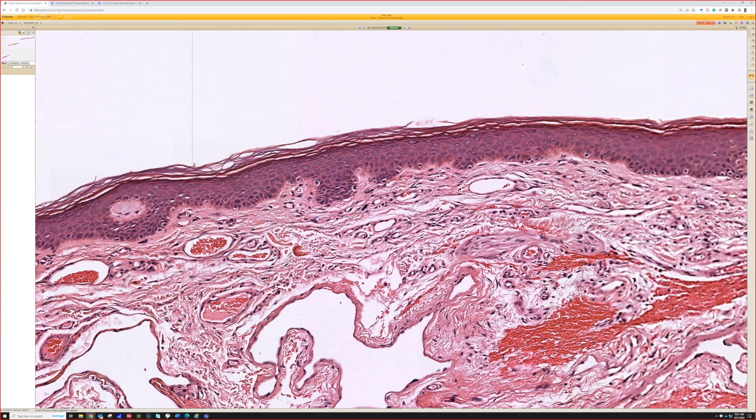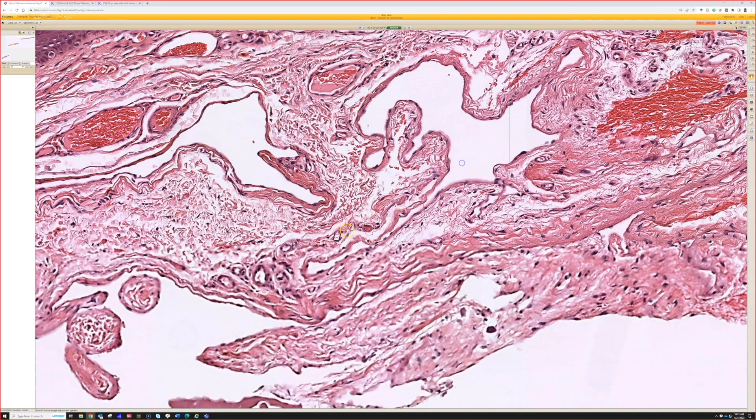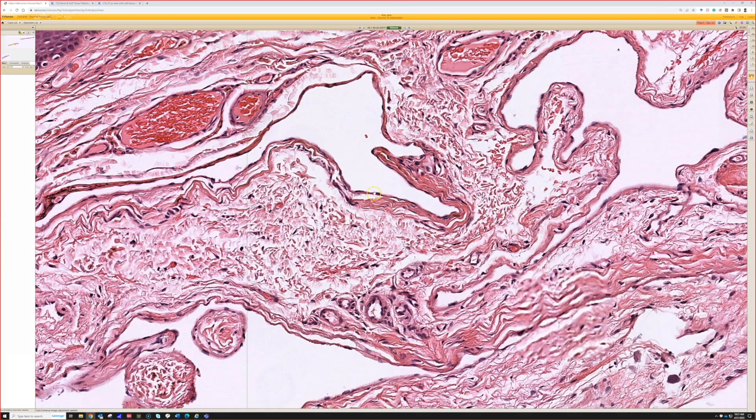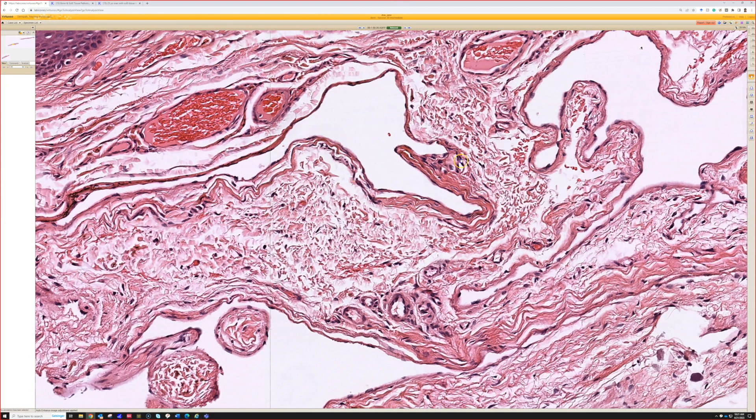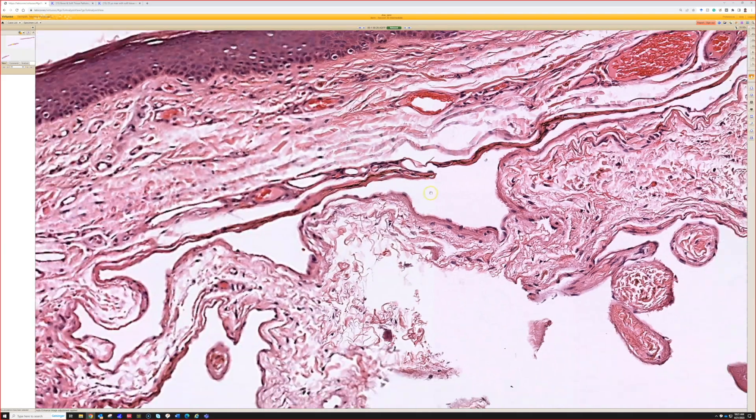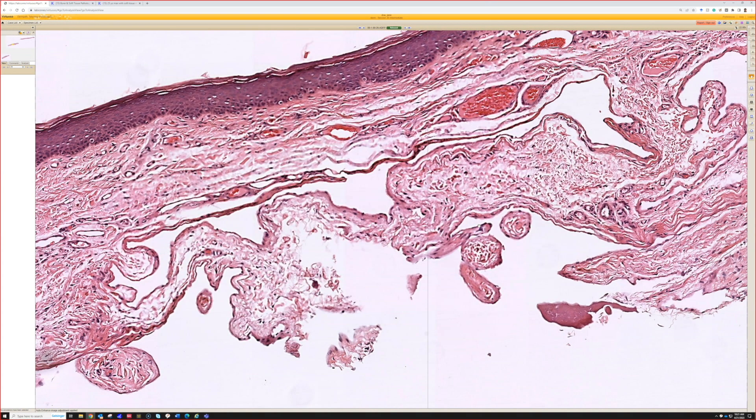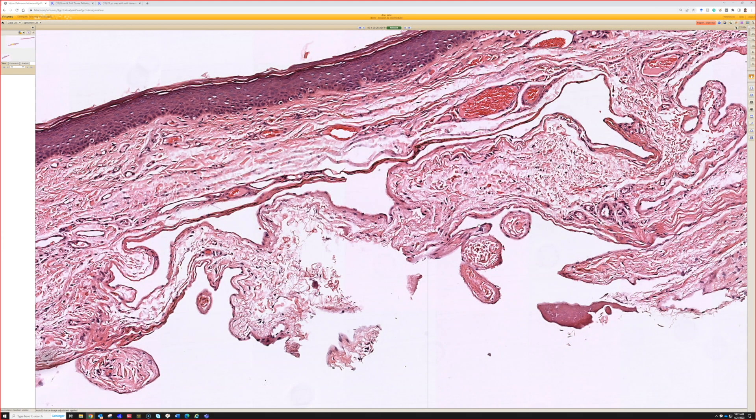So we do have some telangiectasias here, but also we've got something that's much bigger and more irregular and lined by very thin, bland endothelial cells and have the thinnest little collagen wall possible. And so these are Venous Lakes, and they often, the blood often washes out of them during processing. So they often are empty like this and not blood-filled when we get them on a biopsy.